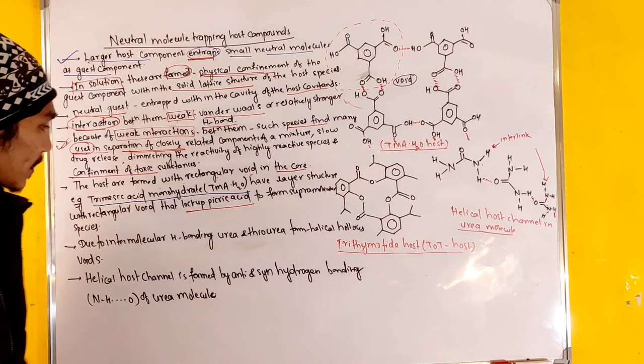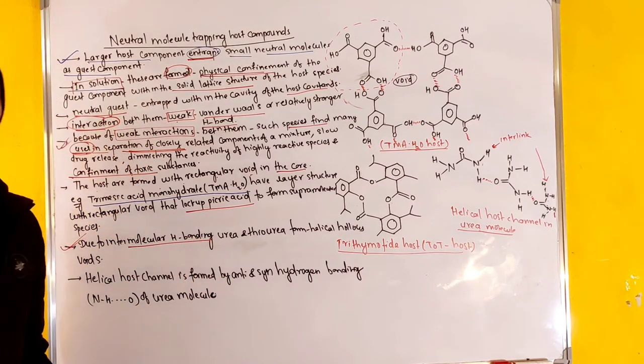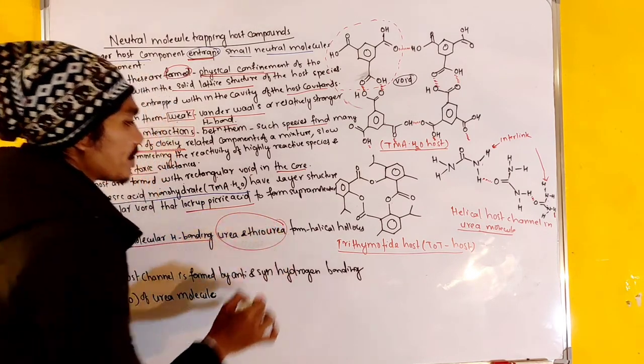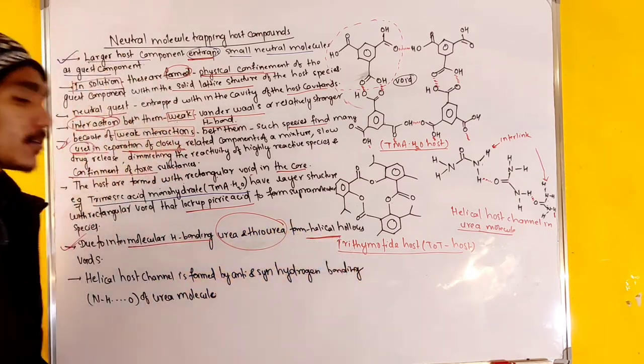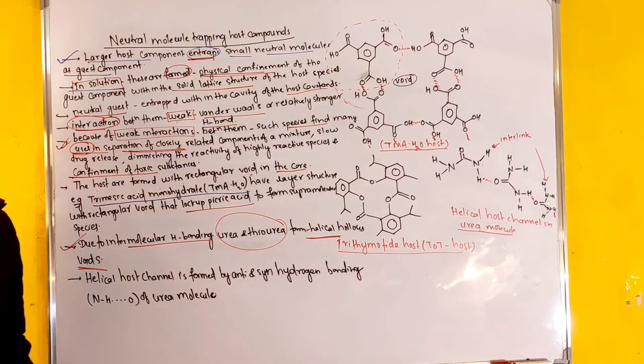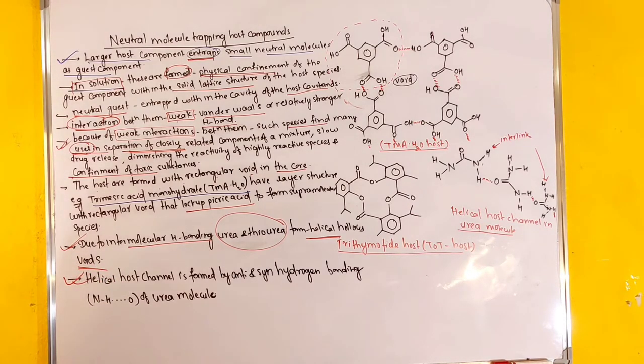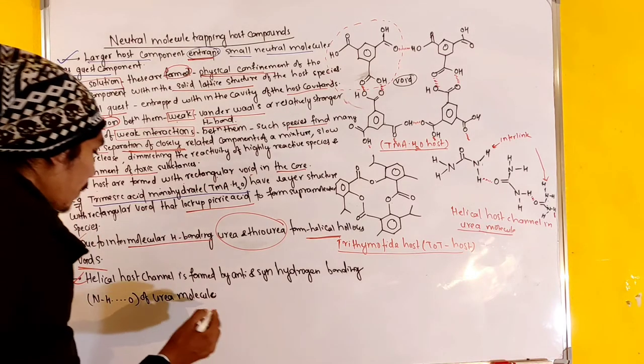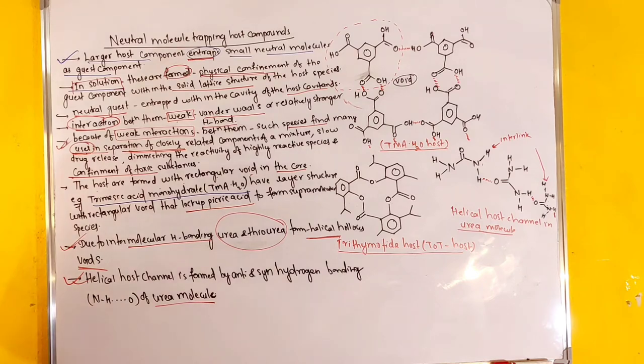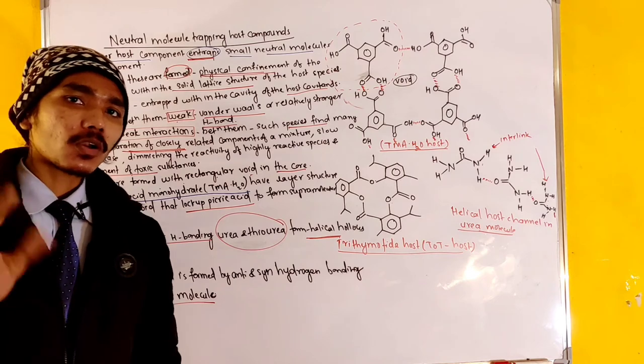Due to intermolecular hydrogen bonding of urea and thiourea, intermolecular hydrogen bonding forms helical hollow voids. Helical hollow voids co-formation. Helical host channel is formed by anti and syn hydrogen bonding of urea molecules, anti and syn hydrogen bonding.